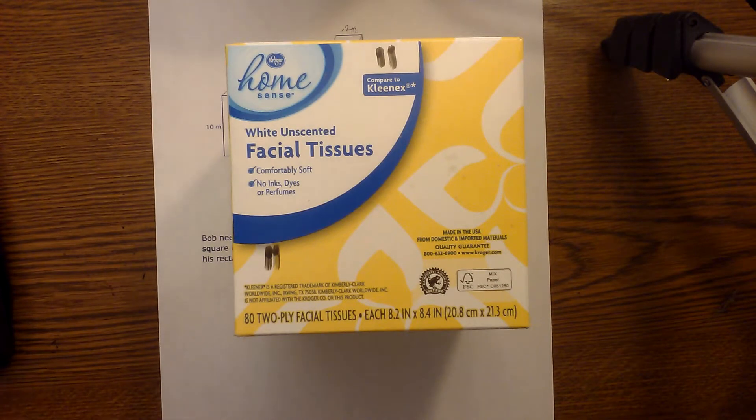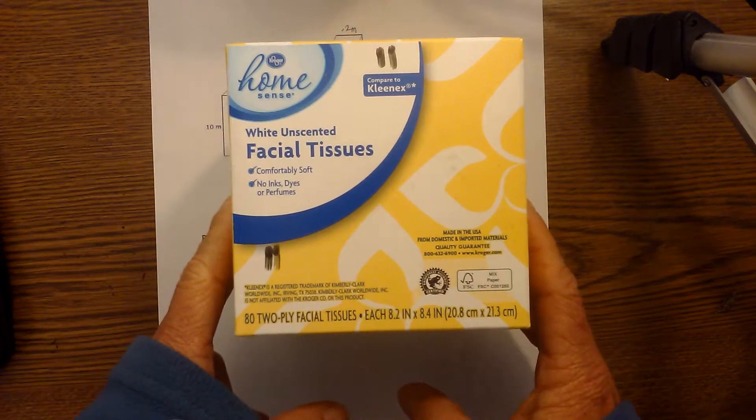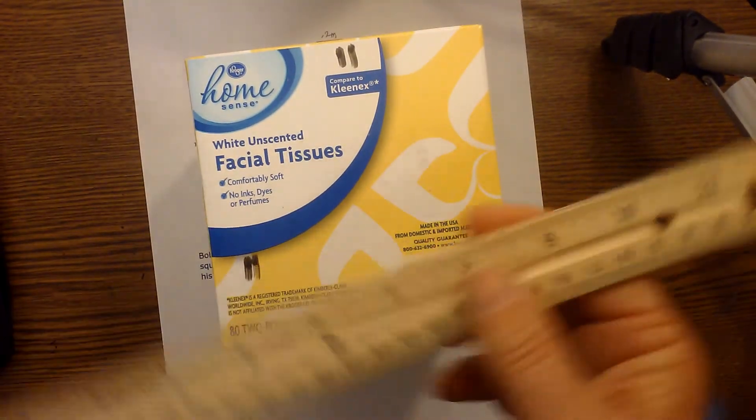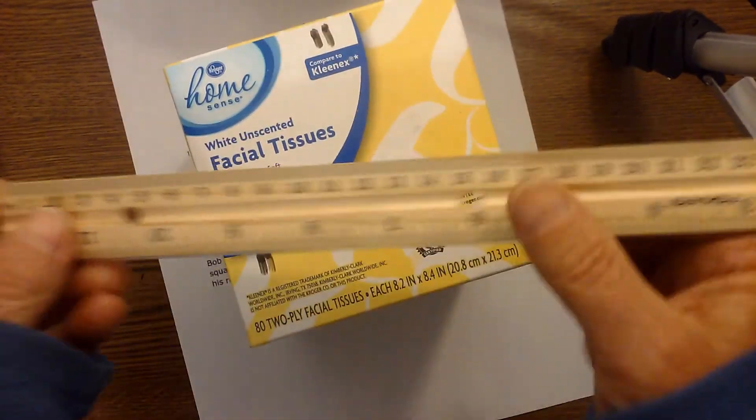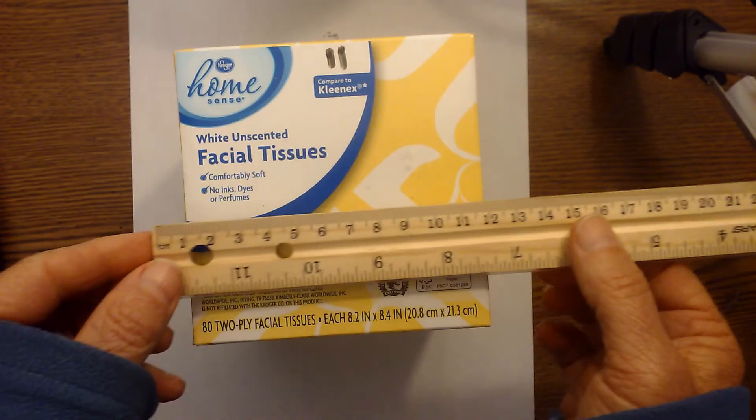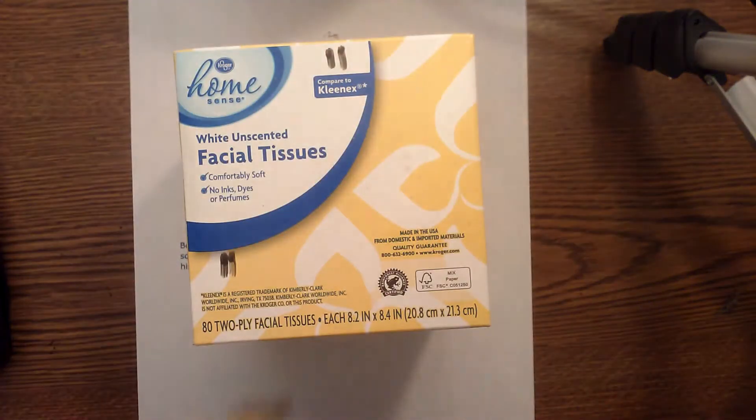And finally, what if you are given an actual rectangular prism and you need to find the volume of this. Basically what you do is you get your ruler out. I'm going to measure in centimeters. You measure the length, and the width, and then the height.